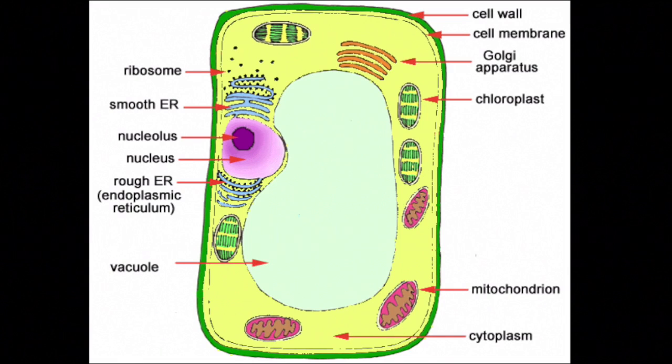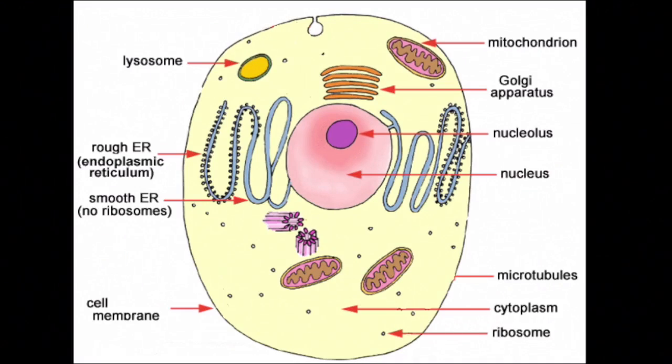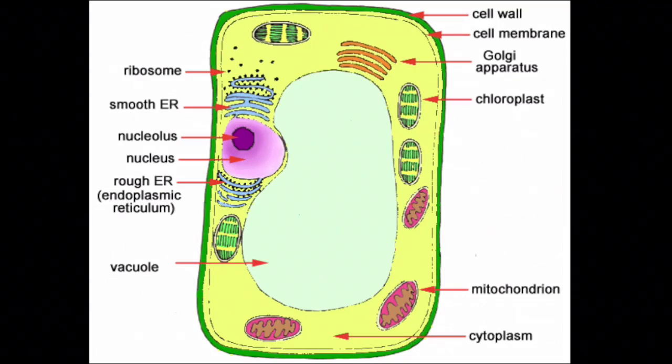To begin with, let's take a look at a plant cell and an animal cell. Chloroplasts and cell walls are unique to a plant cell. They will not be found in any kind of an animal cell.